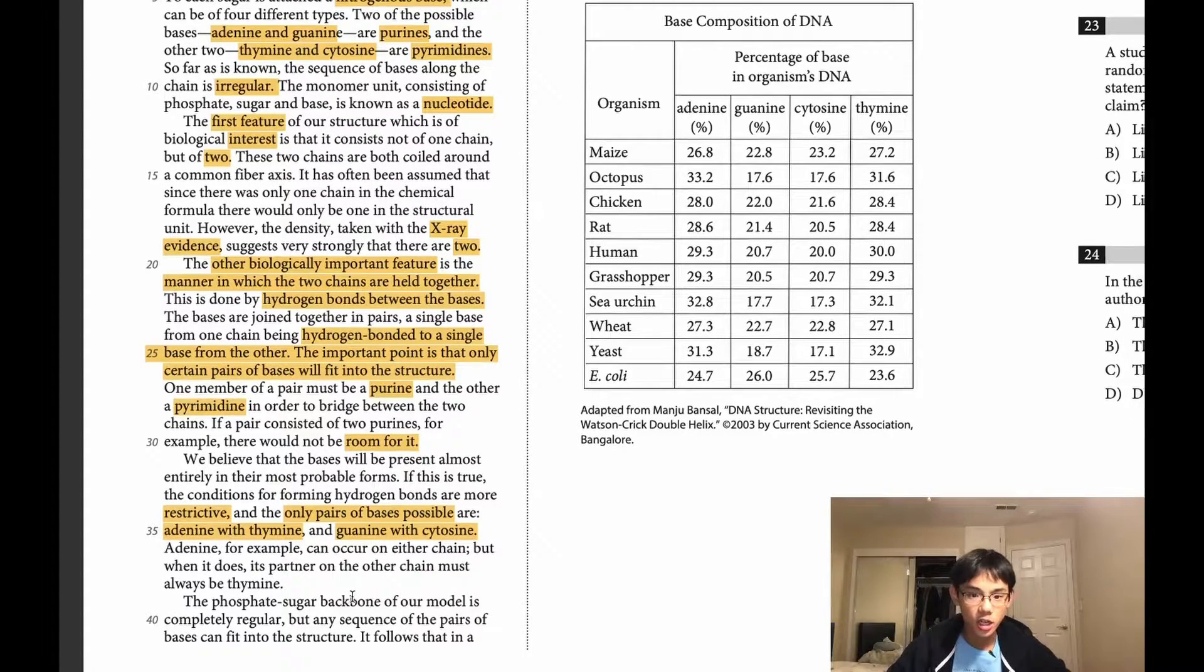Adenine, for example, can occur in either chain, but when it does its partner on the other chain must always be thymine. So adenine always pairs with thymine.